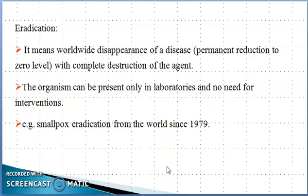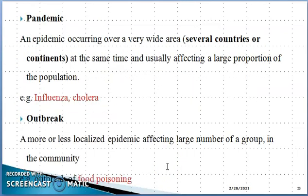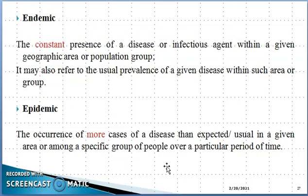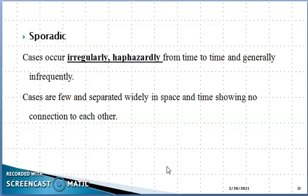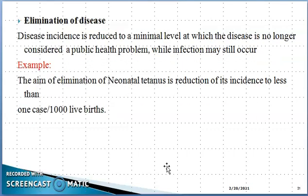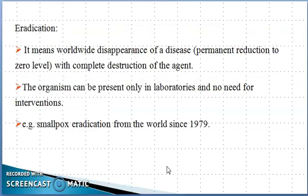So to summarize for students: endemic means usual, constant, or expected frequency of cases. Epidemic is when expected frequency is exceeded. Pandemic is all over the world, a large geographic area. Outbreak is frequent cases in a specific community. Sporadic is irregular timing and geography with no relation between cases. Nosocomial infection is hospital-acquired. Elimination is to minimize the disease so it is not considered a public health problem. Eradication means completely zero cases.